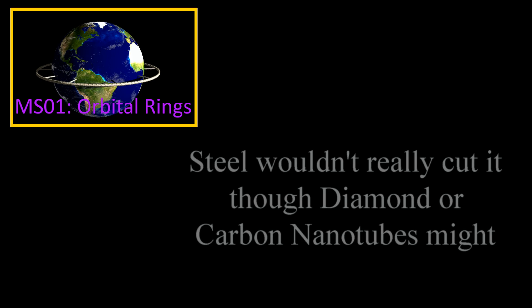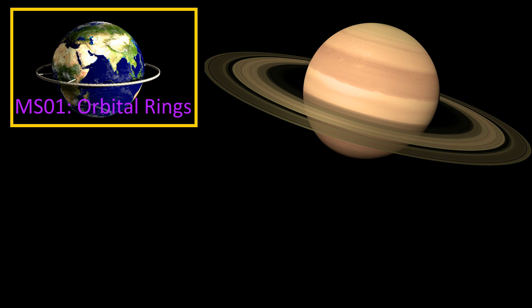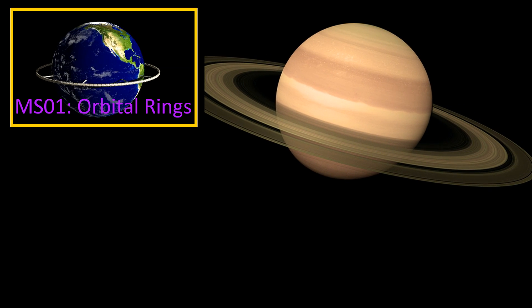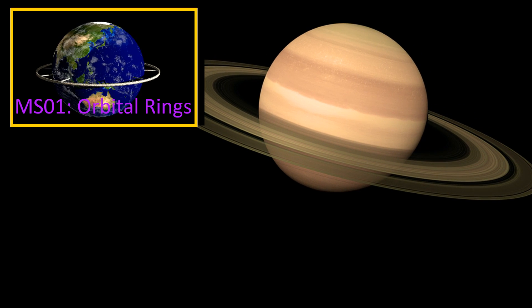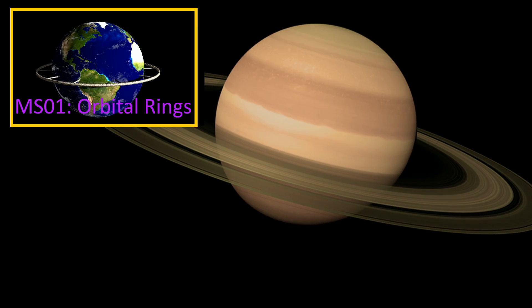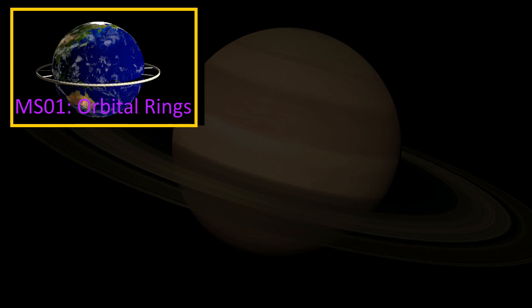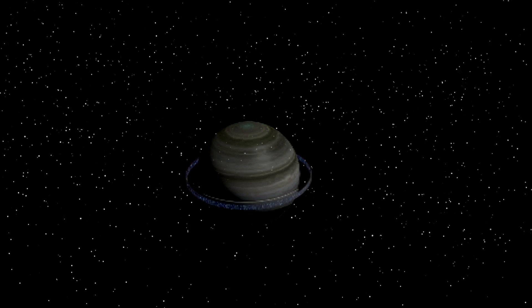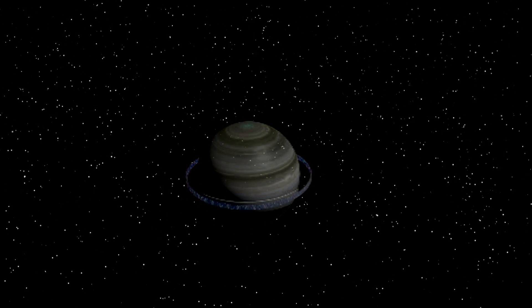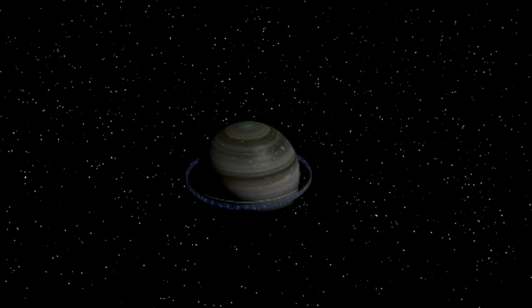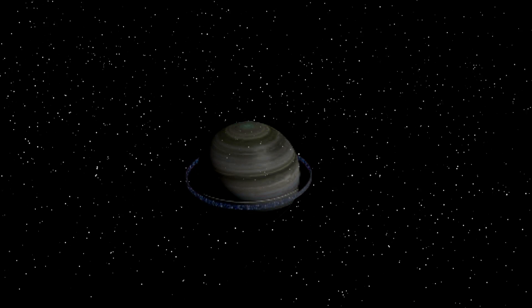This is where orbital rings we discussed back in the first megastructures video come into play. By using a stream of particles orbiting a planet normally, just like a planet ring, you can magnetically levitate material over that. You can go back and review that video if you want the details on how that works. So you build a ring, it appears as a solid object that is not moving, though in reality it's got its own fill of material orbiting the planet, akin to a hose turned into a donut full of moving water. The more mass you pile onto that ring the faster the material inside needs to go to hold it up.